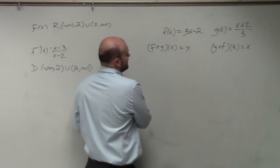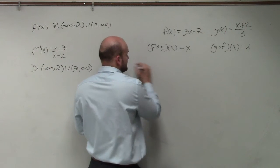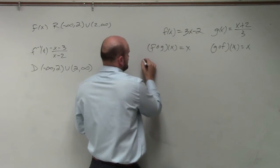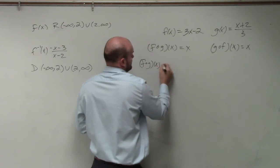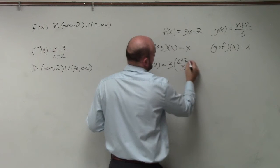So let's do g of f of x, which is basically meaning we're going to plug the g of x function into the f of x function. So this looks like this: 3 times x plus 2 over 3 minus 2.